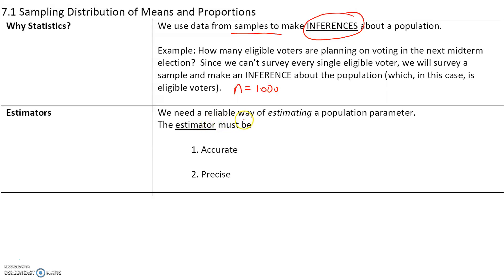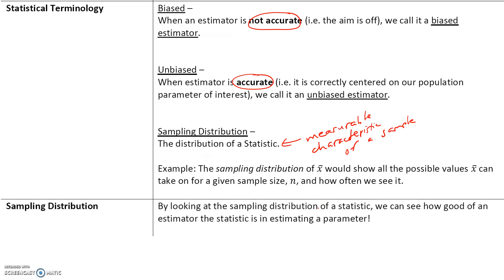We need a reliable way of estimating a population parameter. We use data from a sample to estimate the population parameter, so this estimator must be accurate and it must be precise. A biased estimator is when an estimator is not accurate. When an estimator is accurate — meaning it's correctly centered on our population parameter of interest — we call it an unbiased estimator.